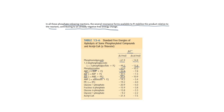The value for 1,3-bisphosphoglycerate is minus 49.3 kilojoules per mole. For AMP hydrolysis to adenosine and inorganic phosphate, the value is minus 14.2 kJ/mol (approximately). For acetyl coenzyme A, the standard free energy of hydrolysis is minus 31.4 kilojoules per mole. These are the values in terms of kilocalories per mole as well.